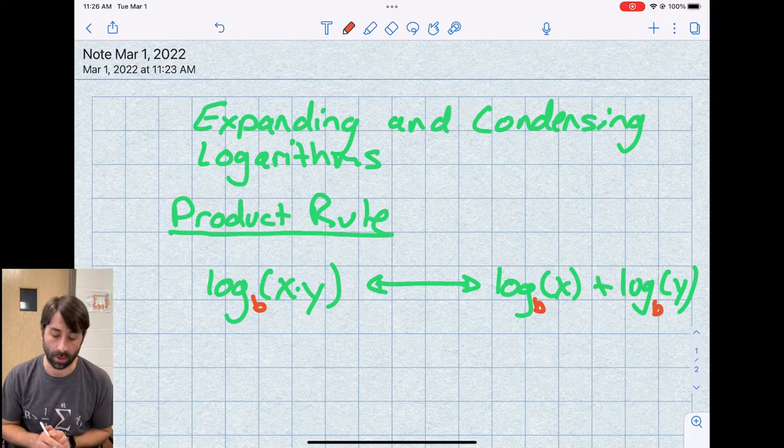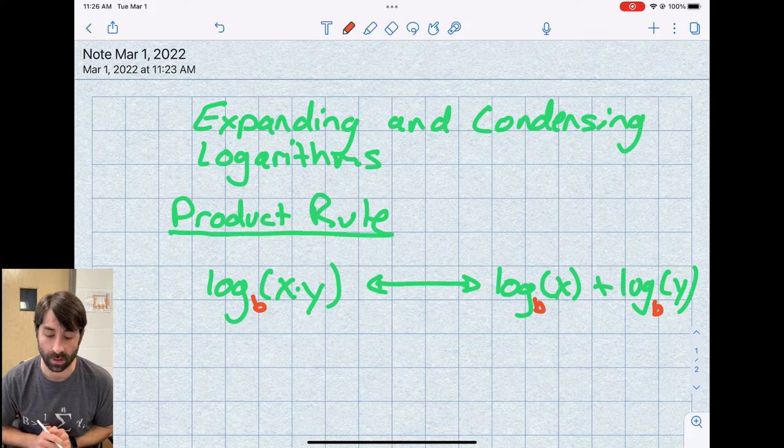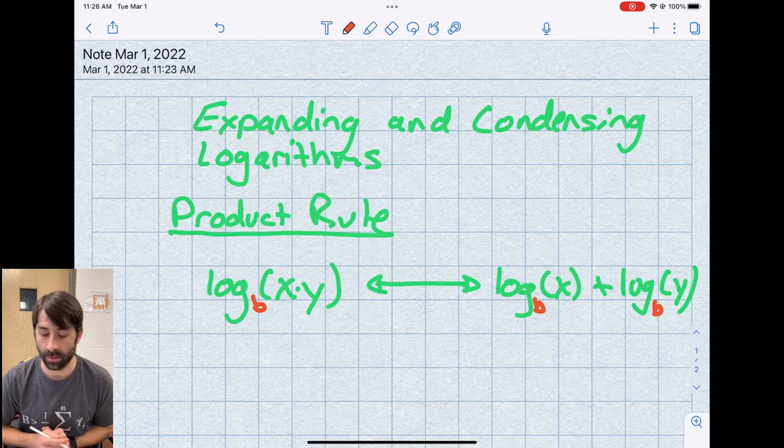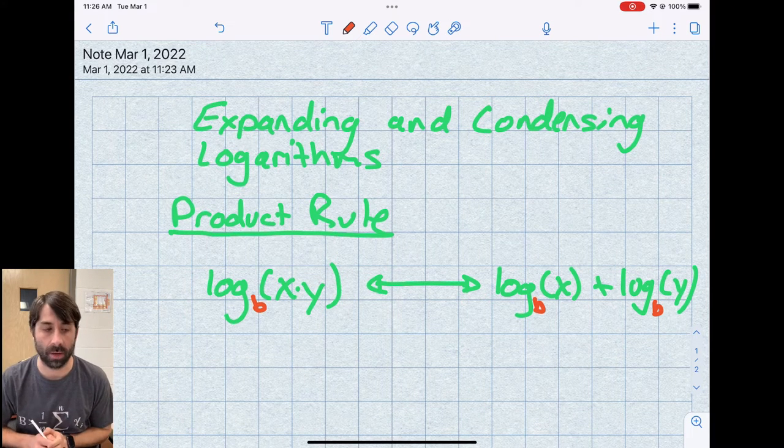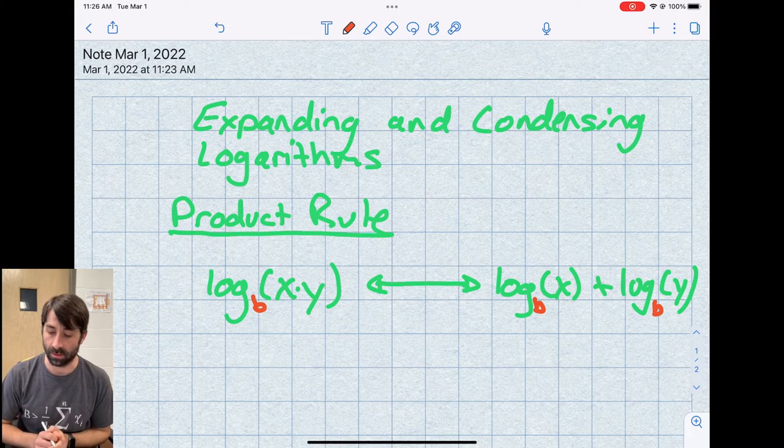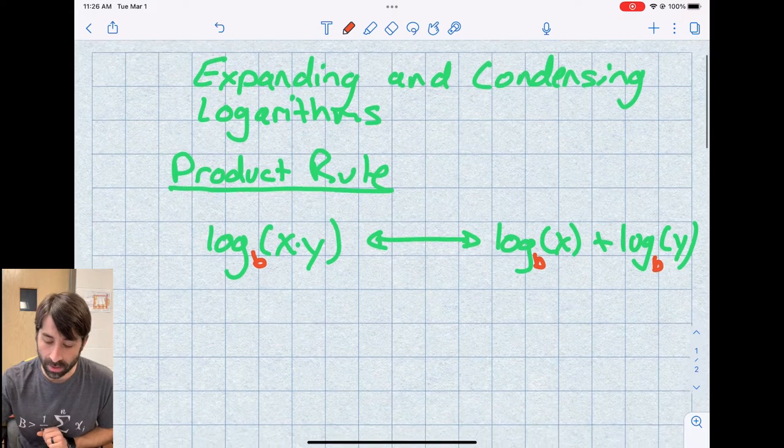I wrote that out just initially as the common log and we can also write that as the natural log. We can write that as log base 3. It doesn't matter, as long as the bases of the logs are the same. That's the first rule.